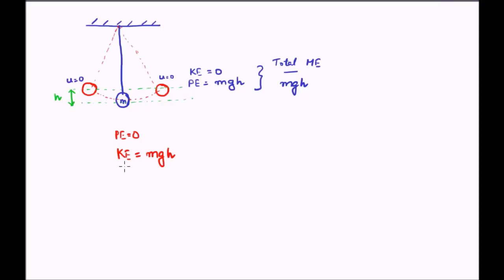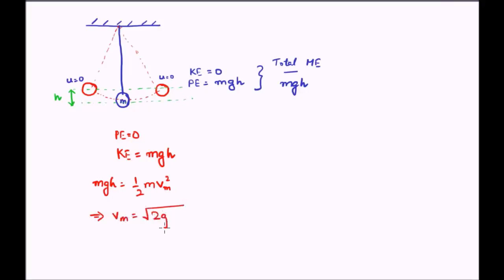We can also find the maximum velocity. The maximum velocity occurs at the mean position, because that is where kinetic energy is maximum. Using the kinetic energy equal to mgh: mgh = ½mv², where v is the maximum velocity v_m. This gives v_m = √(2gh). So the higher the bob is displaced initially, the greater will be the maximum velocity at the mean position.